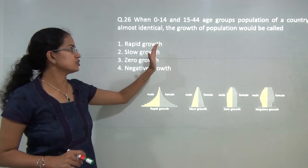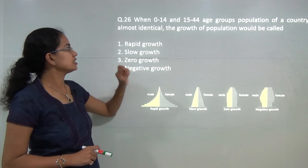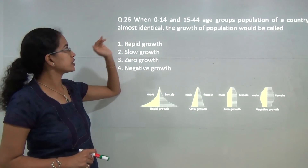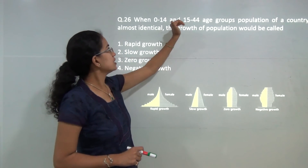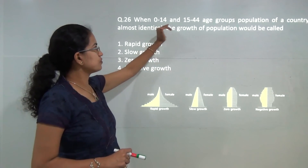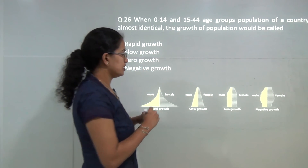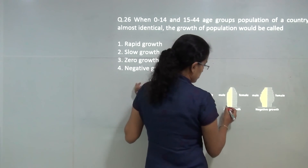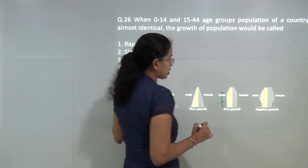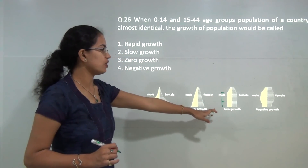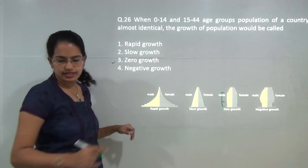We will start with the geography paper 2 for January 2017, section 2, that is question 26 to 50. The first question talks about the identical age group from 0 to 14 and 15 to 54. As visible from the diagram, the growth curve for 0 to 15 and 15 to 44 is constant, so 0 growth would be the correct answer.